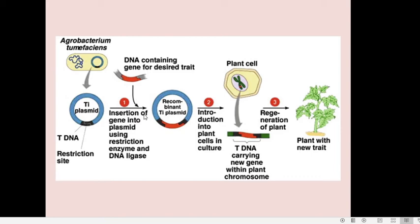For co-culturing, you can use independent plant cells, calluses of plants, or meristematic cells of plants with the modified Agrobacterium. Later they can be taken into tissue culture, grown into plantlets, and then taken for growth outside. The plant will then express the new gene, producing the particular amino acid coded by the gene we inserted into the plant cell through the Ti plasmid of Agrobacterium tumefaciens.